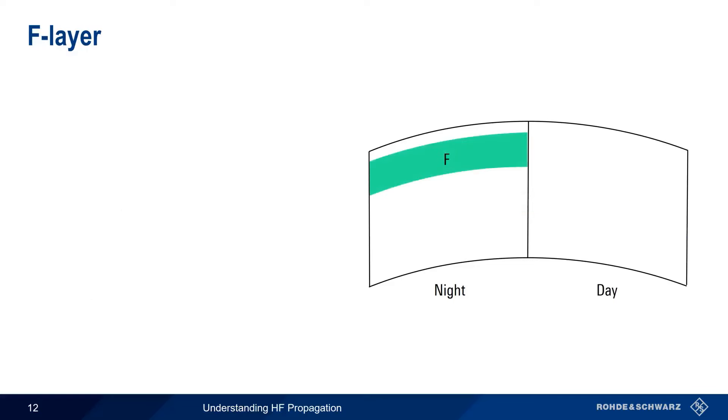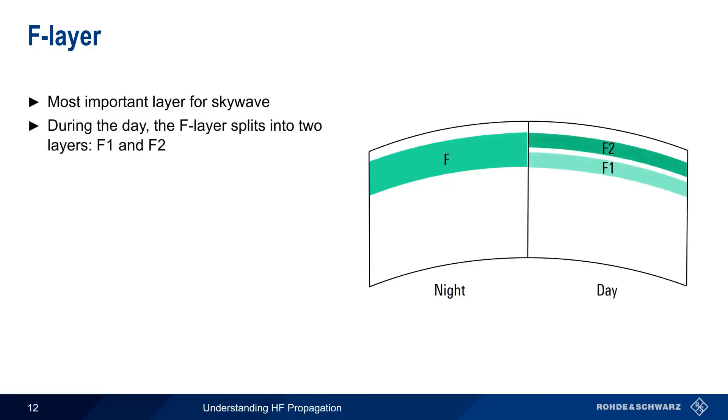The F layer is the most important for skywave propagation. During the day, the F layer splits into two sub-layers, F1 and F2, which merge back into a single layer again at night. Compared to the D and E layers, the height of the F layers changes considerably based on things such as time of day, season, and solar conditions. More on this shortly.